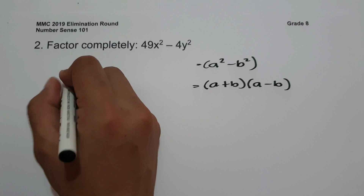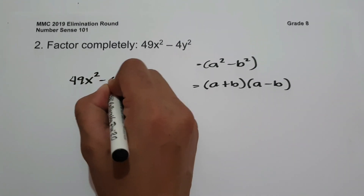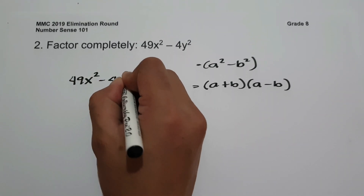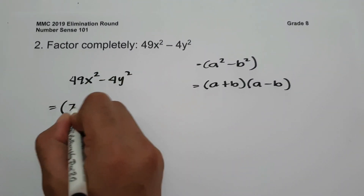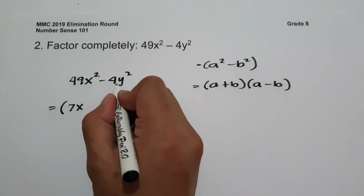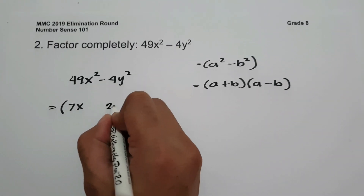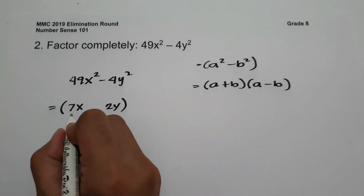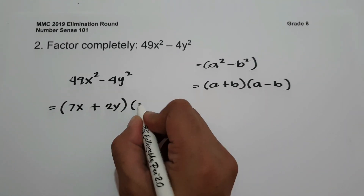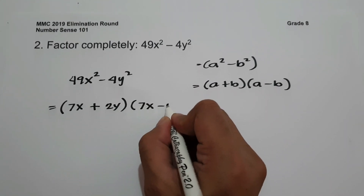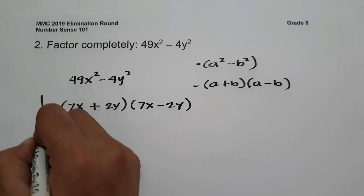To factor completely: the square root of 49x² is 7x, and the square root of 4y² is 2y. So we have (7x + 2y)(7x - 2y). This will be our answer.